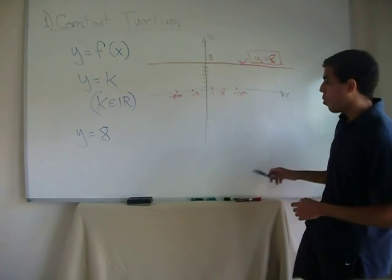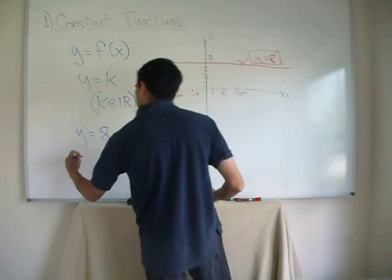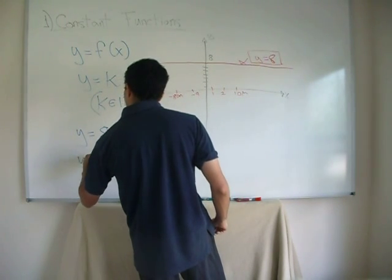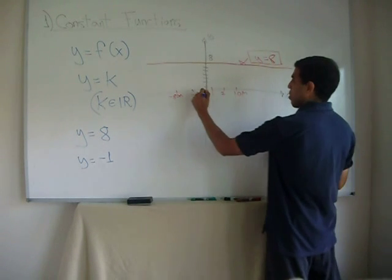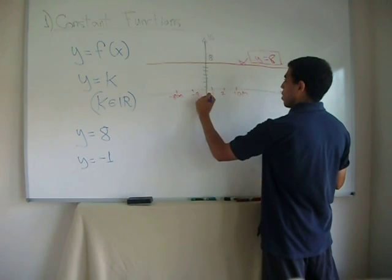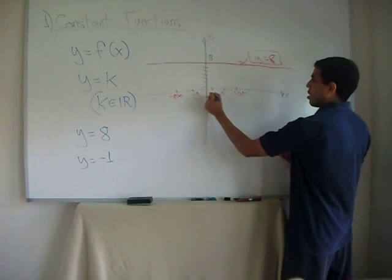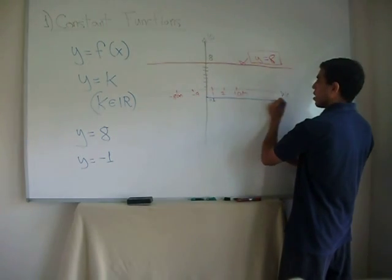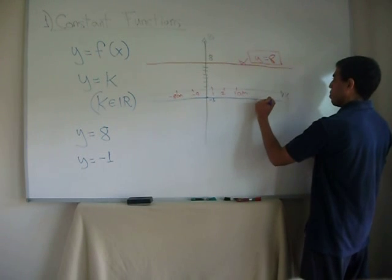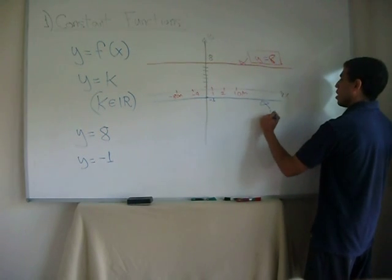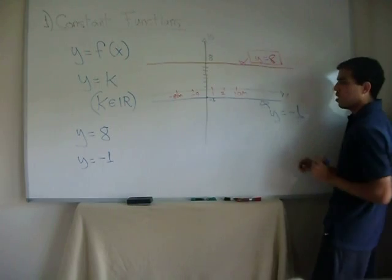We can have, for instance, y equals minus 1, and in that case, all we have to do is count minus 1 right here, and then the plot is going to be a horizontal line, whose value is always minus 1. This would be y equals minus 1.